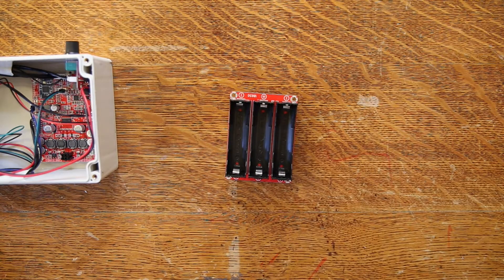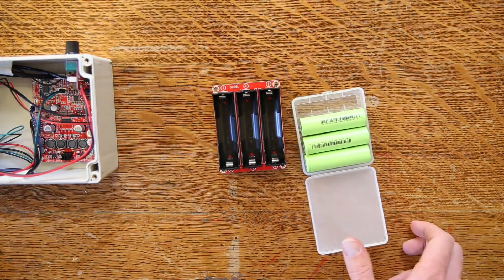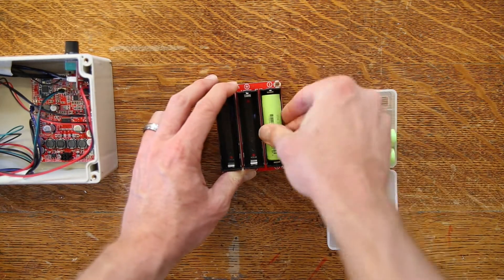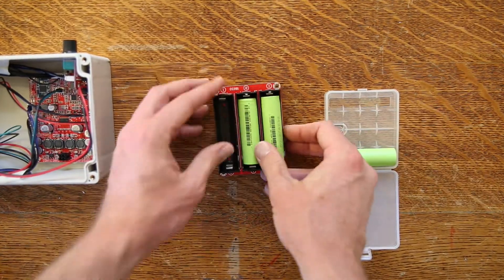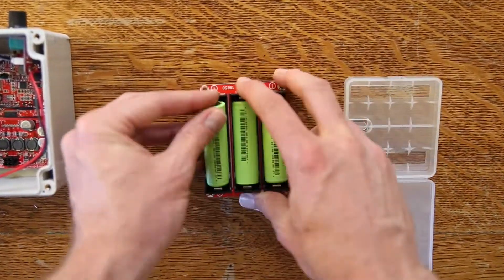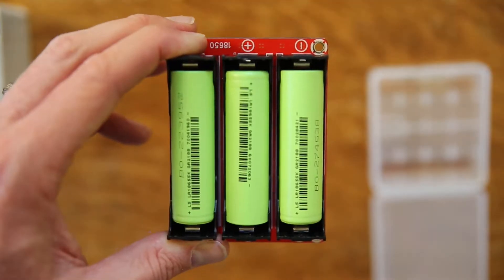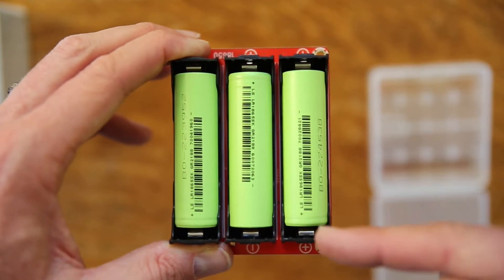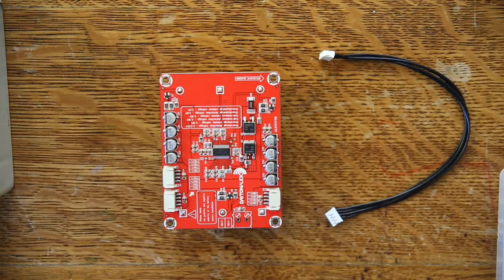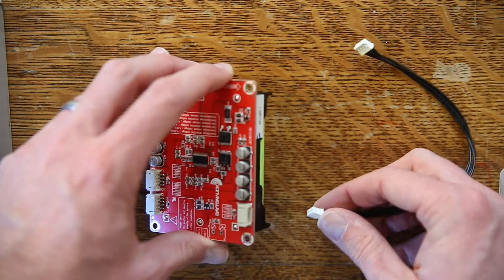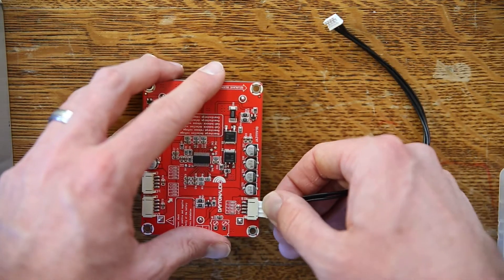Next is the battery board. This kit uses three 18650 size lithium ion batteries. You just want to make sure that you place the batteries in the correct orientation, and then plug in the four pin connector into the battery board.